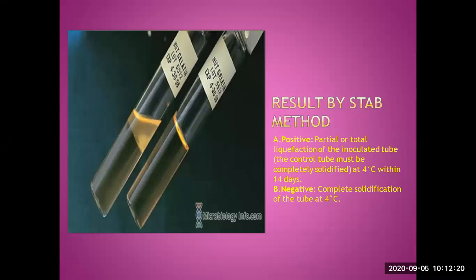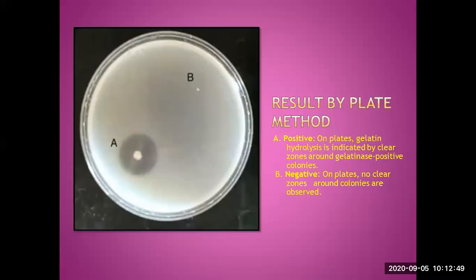We remove the procedure from the incubator and place it in the refrigerator for checking. The control tube remains solid. The tube showing liquefaction gives a positive result. The tube with no liquefaction is completely solid. In the plate method, a positive result shows a clearing zone surrounding the colony, while a negative result shows no such clearing.